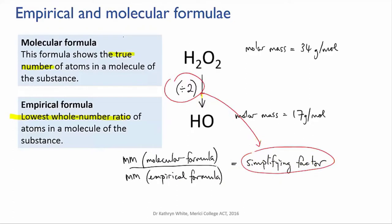So if you can find out the molar mass of the molecular formula and the molar mass of the empirical formula, then you can find out the simplifying factor. And that would then allow you to turn the empirical formula back into the molecular formula and discover what the compound was.